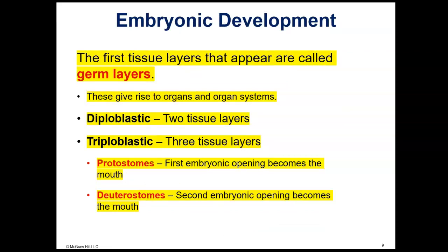As far as development, when animals develop, the first tissue layers are called germ layers. Germ layers give rise to organs and organ systems. If there are two tissue layers, we say the animal is diploblastic. There are only two animal phyla that are diploblastic: the Cnidaria, which includes jellyfish, and the Ctenophora, which includes comb jellies. The rest of the animals we study are triploblastic — they have three tissue layers.